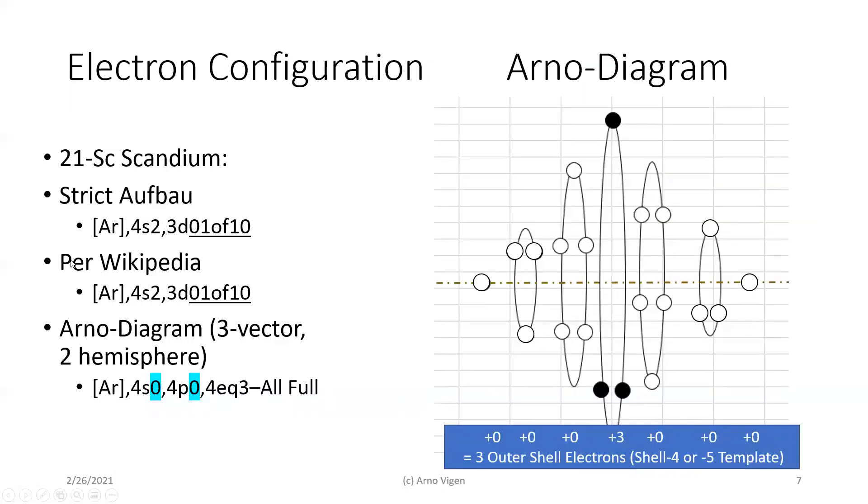Now, Wikipedia has that same logic. The Arno diagram has no full subshells. In fact, you have none at the poles, and nothing at the Ps or the Ds, but you can get three in the equatorial diagram, this being an exception.